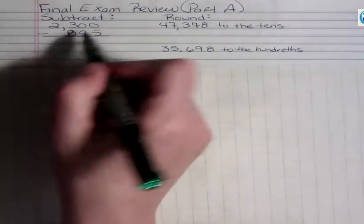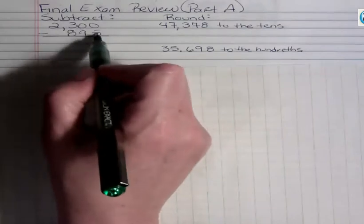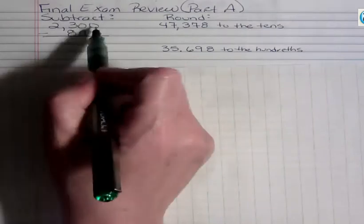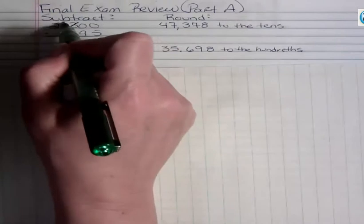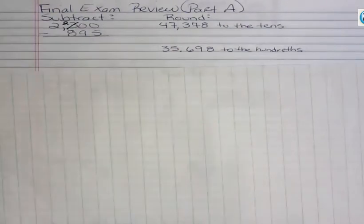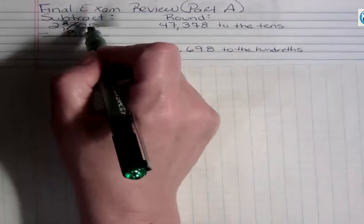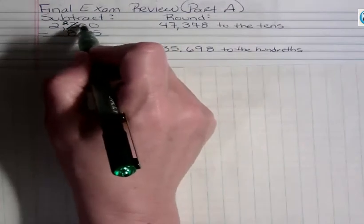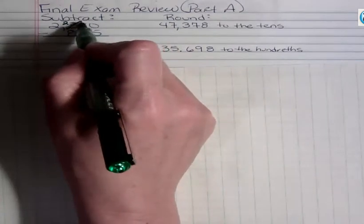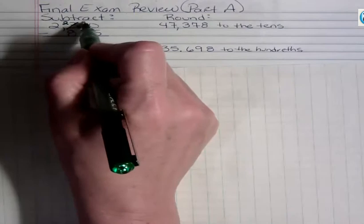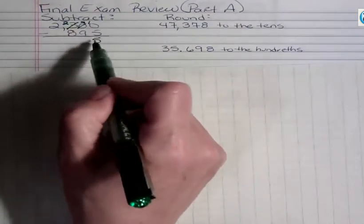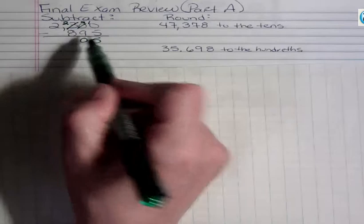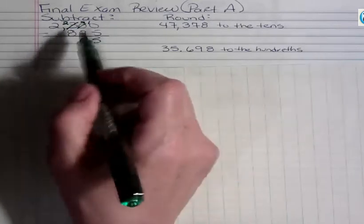When you subtract something, you can't subtract unless you borrow in this particular problem. We're going to borrow from the three and make that two. And what we borrowed was 100, so we're going to make this 9 and make this 10. 10 minus 5 is 5, and 9 minus 9 is 0, and 2 minus 8.